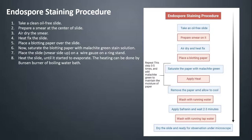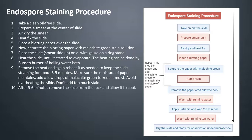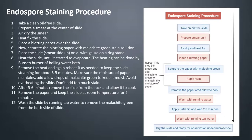Step 9, remove the heat and reheat as needed to keep the slide steaming for about 3–5 minutes. Make sure the moisture of the paper is maintained — add a few drops of malachite green to keep it moist. Avoid overheating the slide and don't add too much stain. Step 10, after 5–6 minutes, remove the slide from the rack and allow it to cool. Step 11, remove the paper and keep the slide at room temperature for 2 minutes. Step 12, wash the slide with running tap water to remove the malachite green from both sides. Step 13, flood the slide with counterstain safranine and wait for 2–3 minutes.